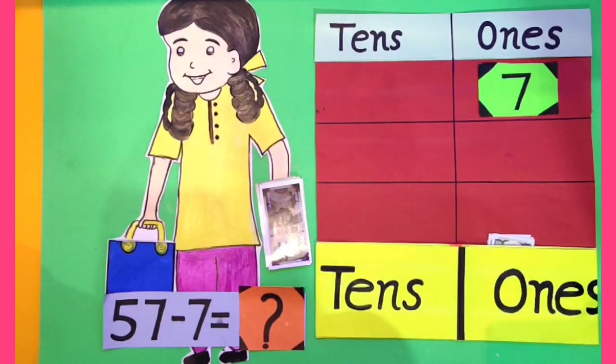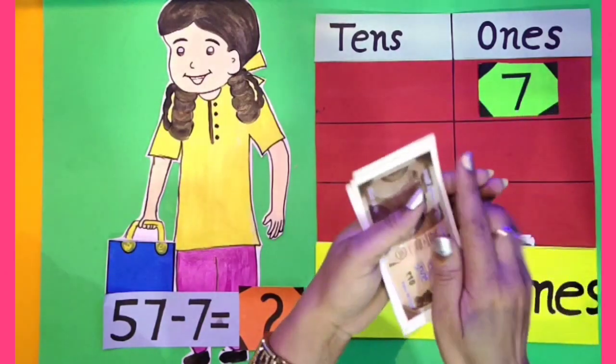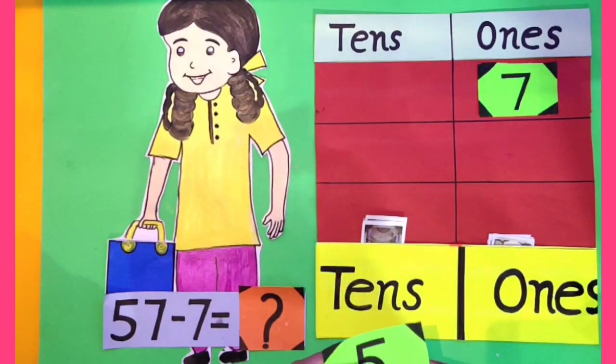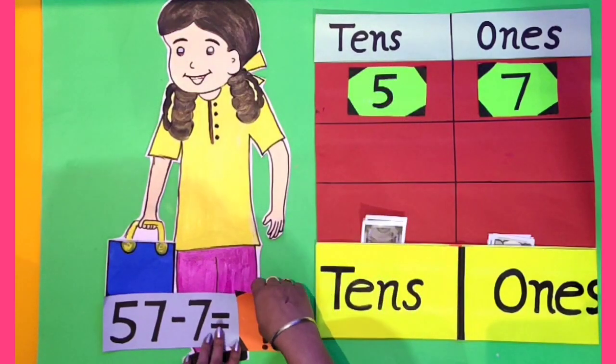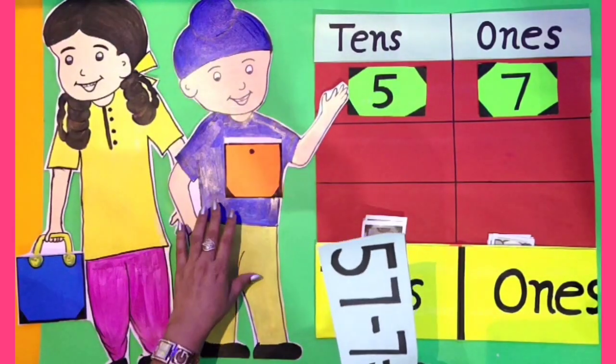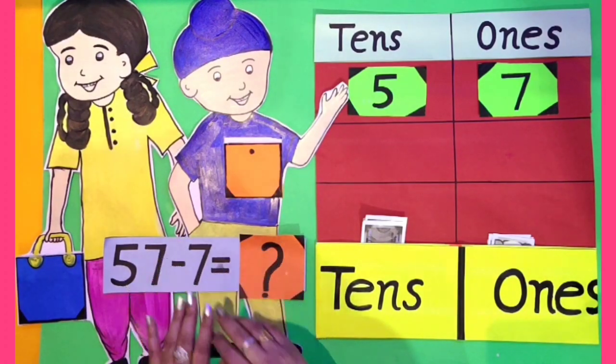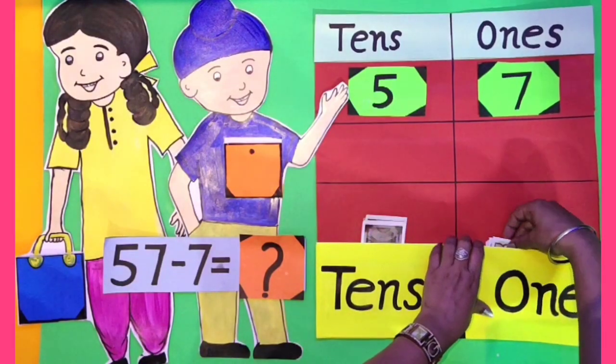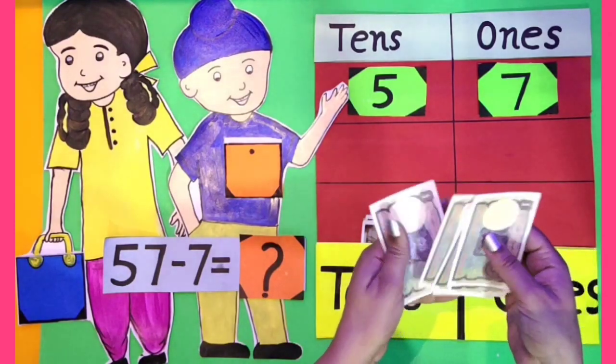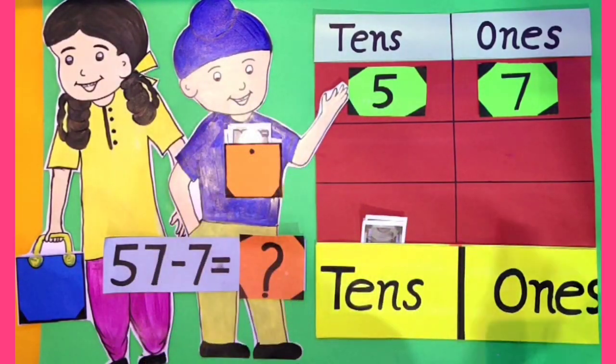Now kids, Arpan gives 7 rupees to Sukman so that he can buy a pencil and an eraser. Let's give 7 rupees to Sukman. Let's count 1, 2, 3, 4, 5, 6, 7. That means 7 ones.